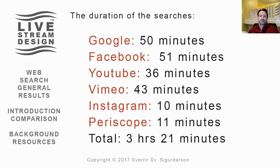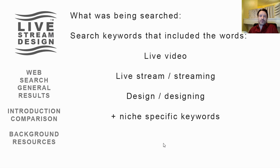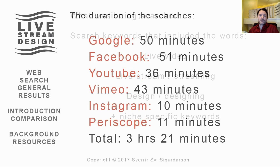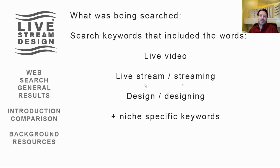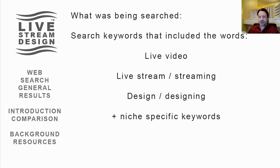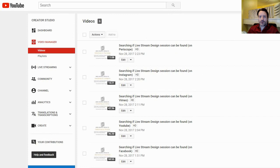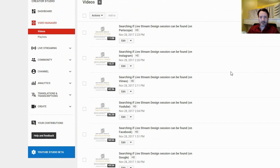The total search duration was about three and a half hours. There were about 20 combinations of search keywords for each website, and up to 10 to 15 search results pages were reviewed per site. The search keywords included: live, video, live stream, streaming, design, designing, creating, and niche-specific keywords combined into various search phrases. All searches were recorded as screencast videos and uploaded to YouTube.